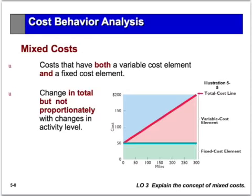A mixed cost is a cost that has both a variable cost element and a fixed cost element as part of its cost structure. This cost will change when we increase the level of activity, but it will not increase or change in direct proportion to the level of activity. It's not fixed because it changes, but it doesn't change in direct proportion, so it's not completely variable either.